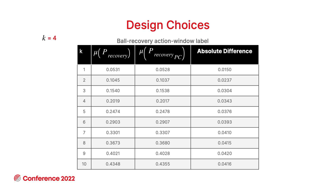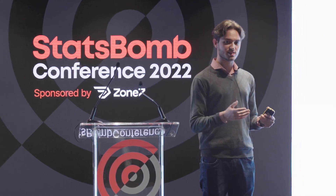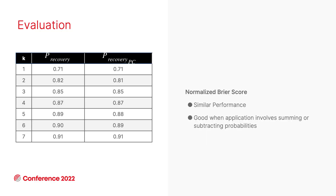Something interesting when we vary K is the absolute difference between peer recovery and peer recovery PC averages — the values are very small. One might say peer recovery and peer recovery PC do not differentiate themselves, but that's not the case as we'll see in an example. It means that both are estimating the same thing: the probability that the defending team will get the ball. In evaluation, they show similar performance, and we use normalized Brier score since we subtract probabilities when computing DDI.